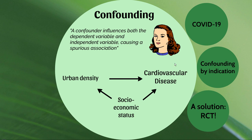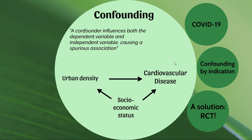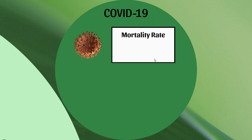Let's move on and see how confounding might influence our analysis of COVID-19 data. We know the mortality rate for males is a lot higher than for females — 2.8% versus 1.7% from early Chinese data, and this is replicated in Italian data and throughout the world. References are in the description.